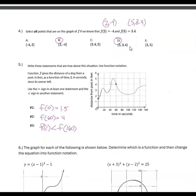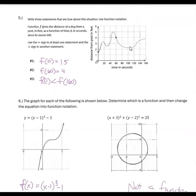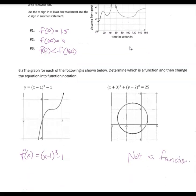Select all points that are the same as F of 2 equals negative 4 — that means the point (2, -4). And the point (5, 3.4) corresponds to F of 5 equals 3.4. On this one, write three statements that are true about the graph. I said: at time 0 it was about 1.5 feet; F of 60, meaning at 60 seconds, it was 4 feet; and F of 0, the distance at 0 seconds, was going to be less than at 160 seconds.